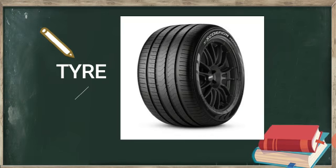This is a tire. Tire round shape ka hota hai. Tire ka use cars, scooters, cycles, and vans mein hota hai. The color of the tire is black.